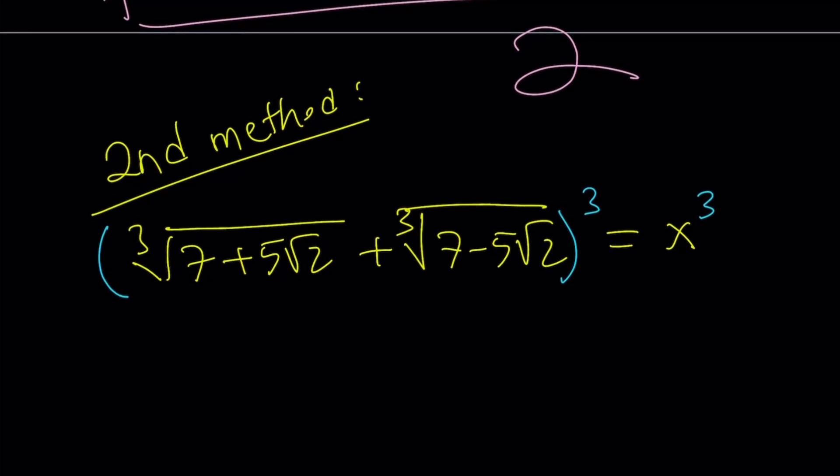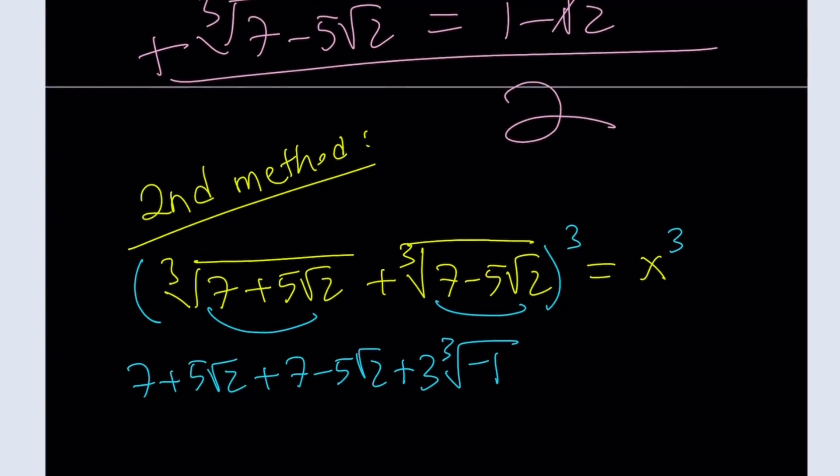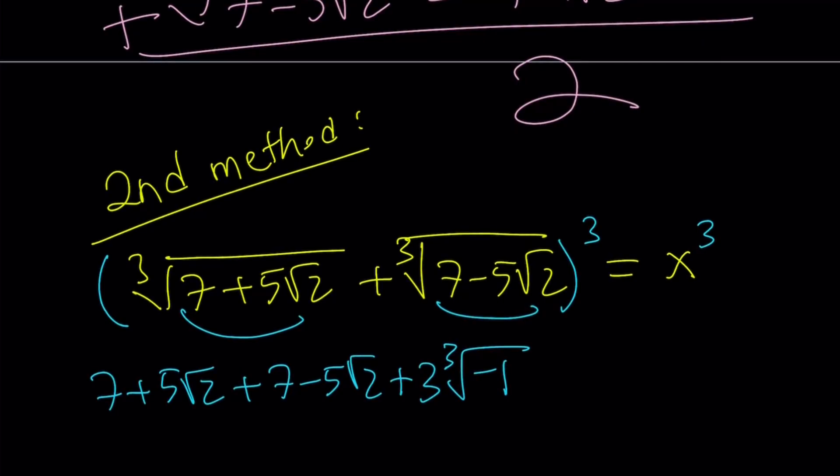Now again I'm going to be using the formula for a plus b quantity cubed or x plus y quantity cubed. That's going to be the cube of the first term, the cube of the second term, and then plus 3ab three times this times that. Again that is going to be cube root of negative 1 because 49 minus 50. And then that is multiplied by the cube root of 7 plus 5 root 2 plus cube root of 7 minus 5 root 2. Oh great, and that is going to equal x cubed. But wait a minute, this is equal to x.